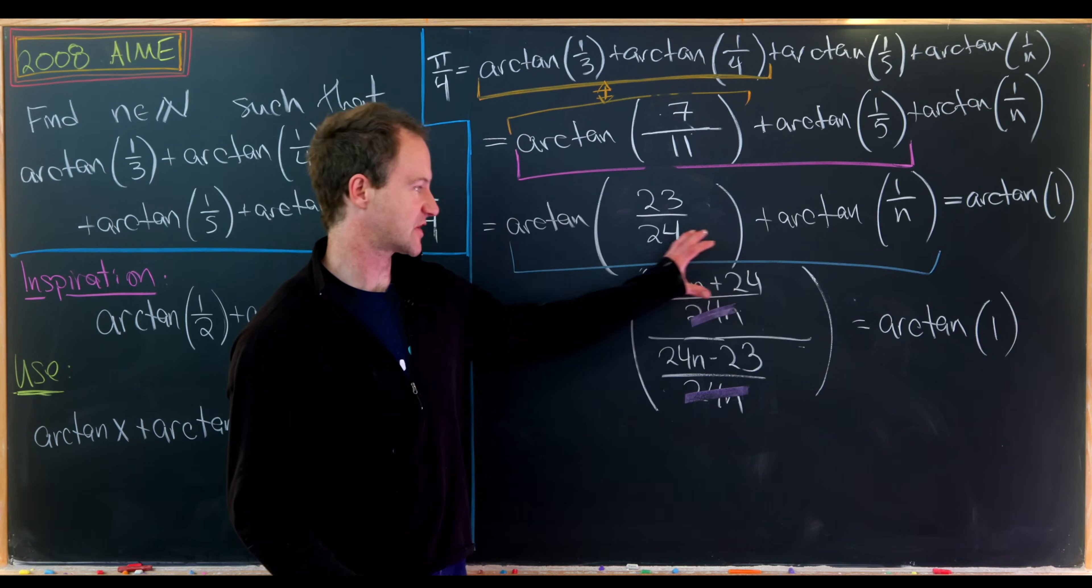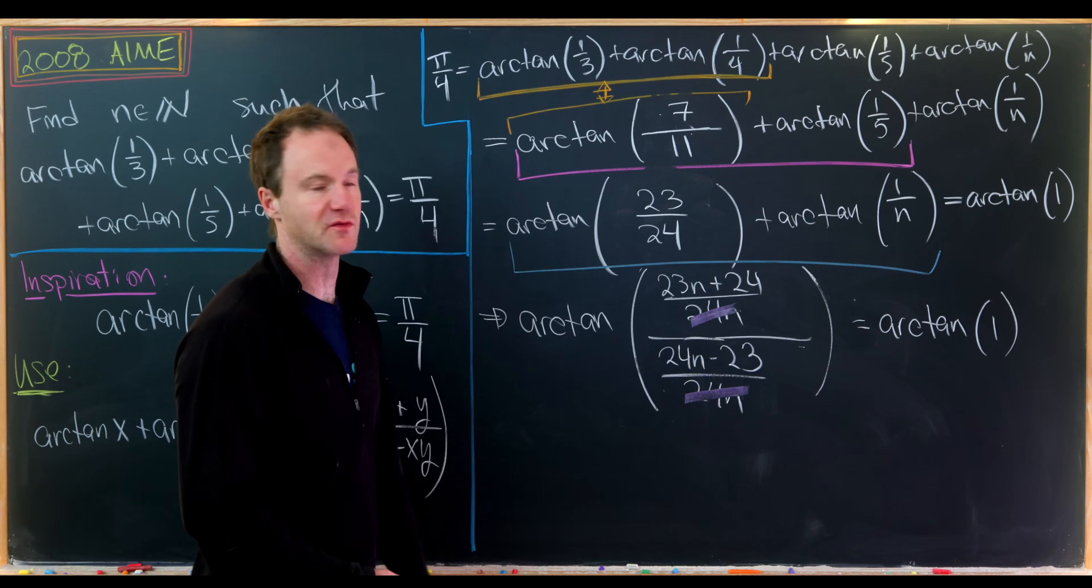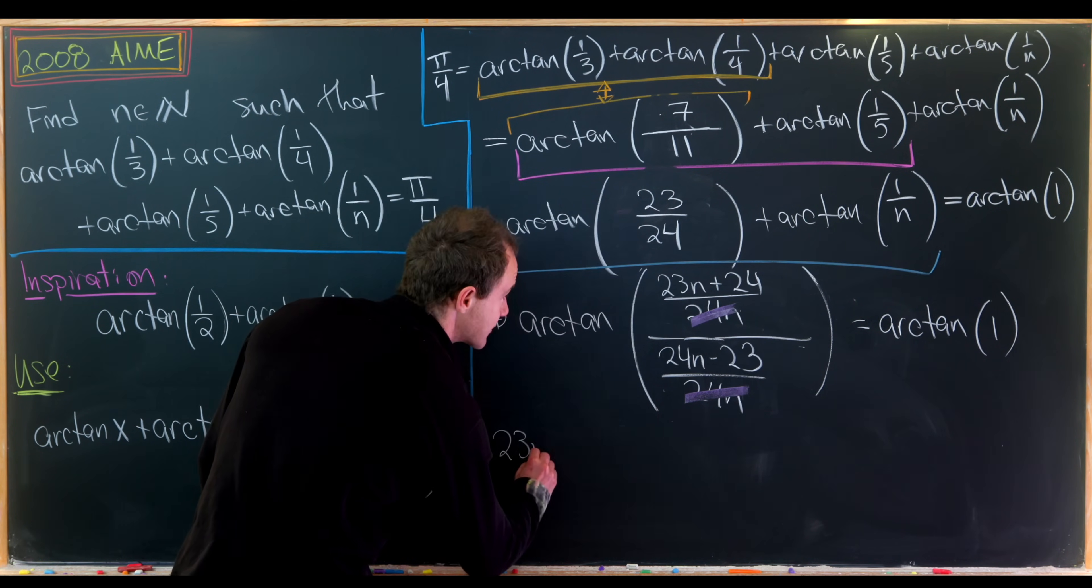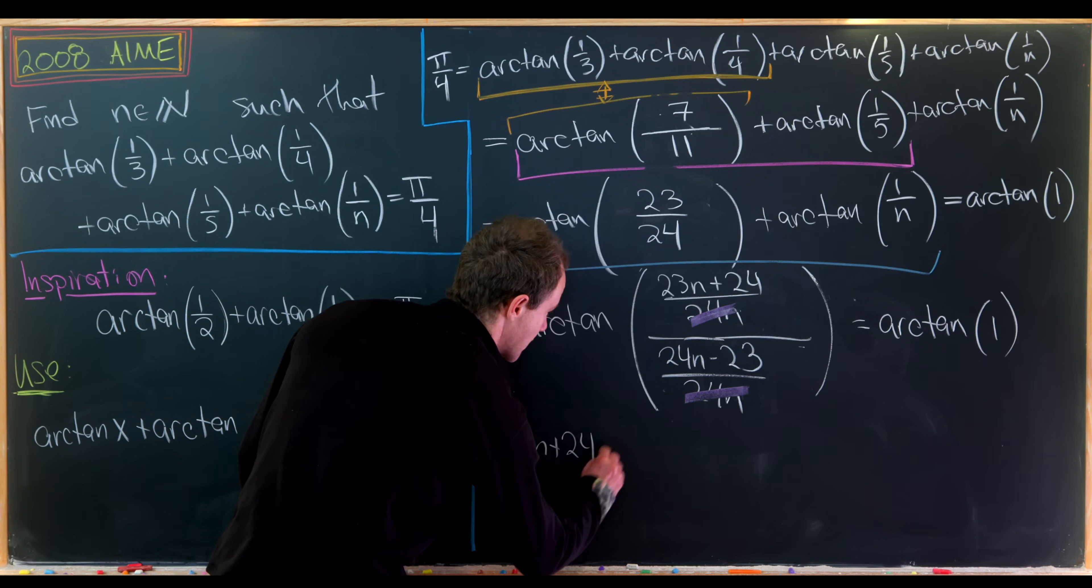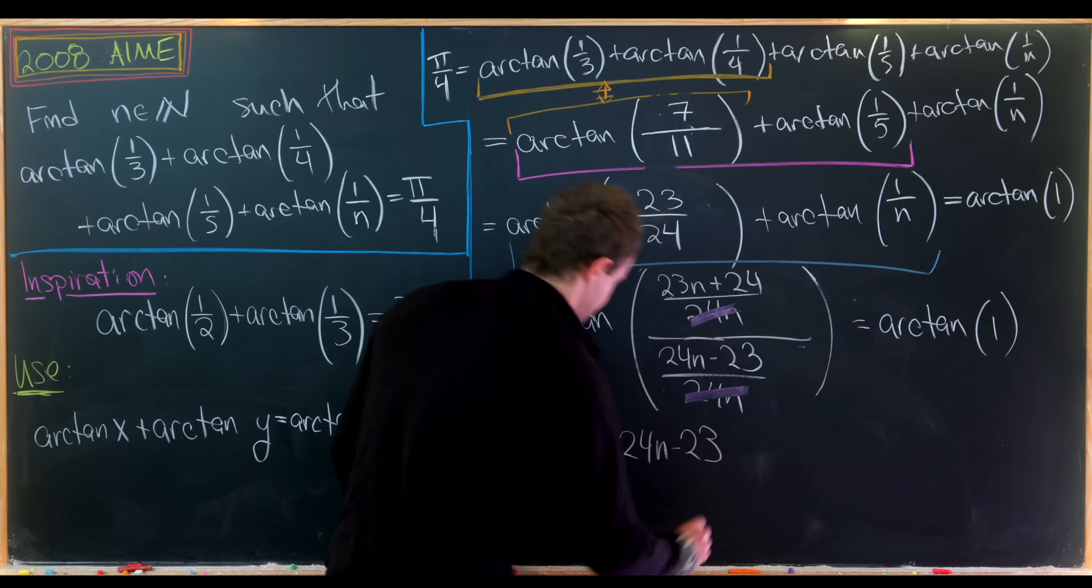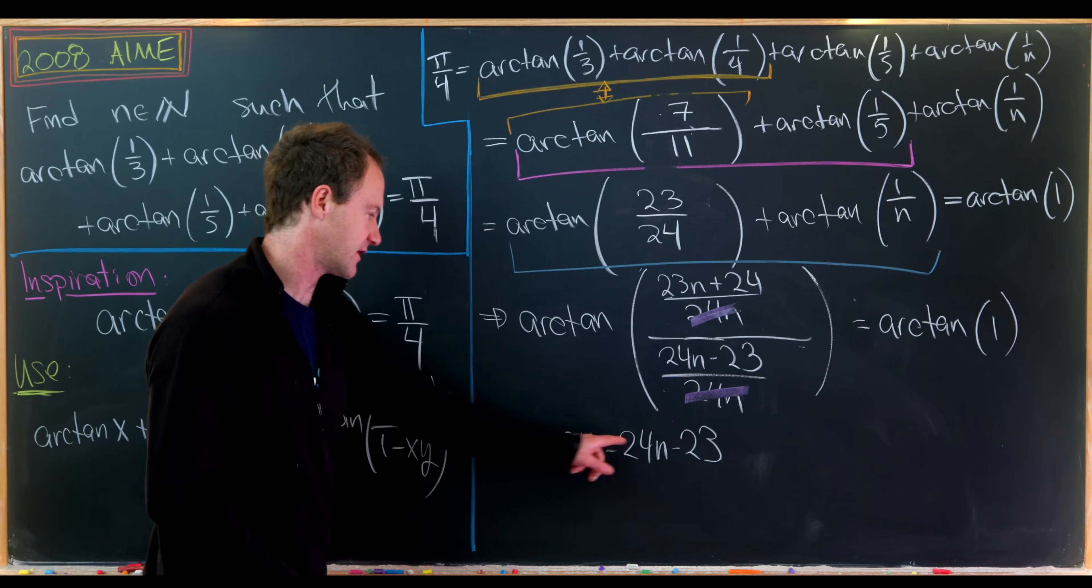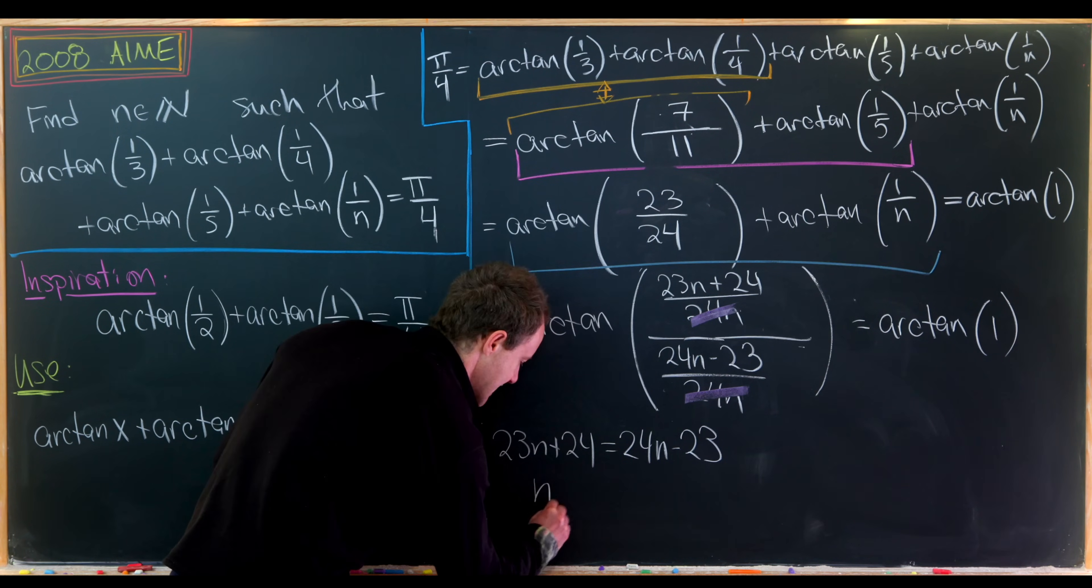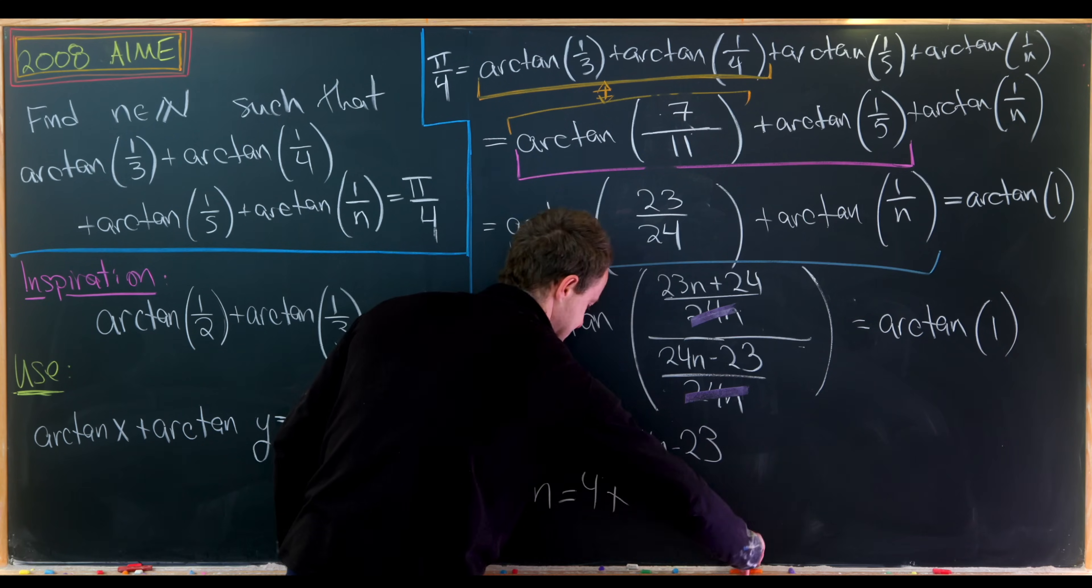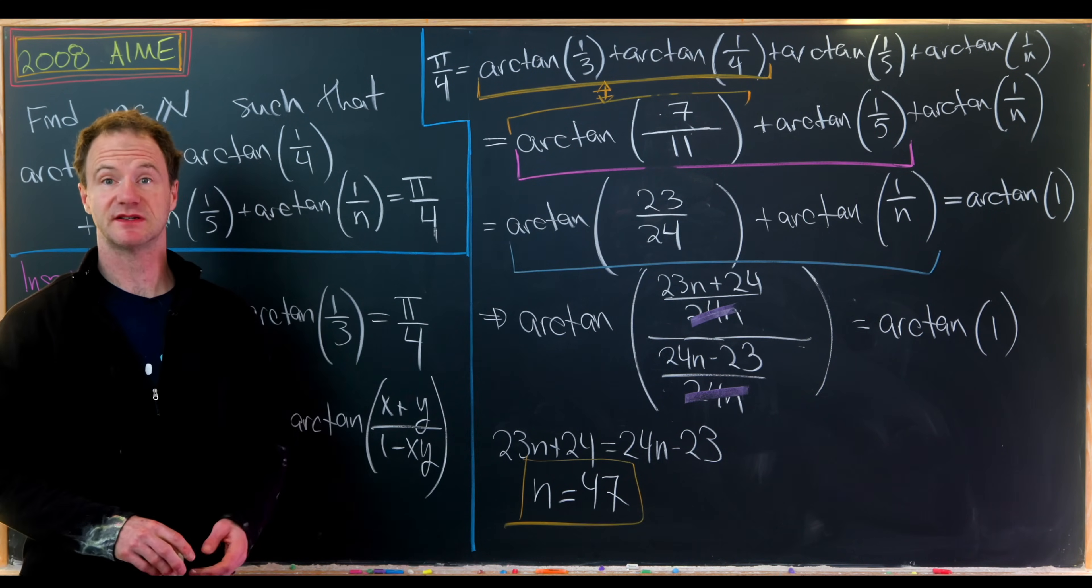This fraction equals 1 if and only if the numerator equals the denominator. That sets up this equation: 23n + 24 = 24n - 23. Moving things around, take 23n and move it over leaving just n. Move this 23 over leaving 47. That's our final answer: n must be 47. That's a good place to stop.